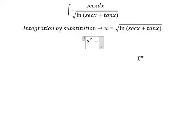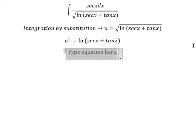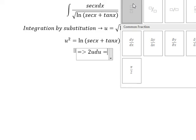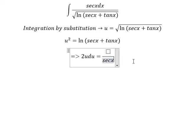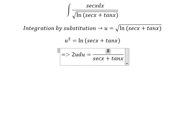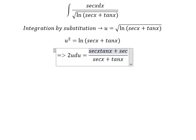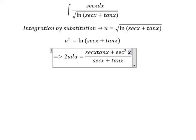Next we take the first derivative on both sides. So 2u du equals, on the numerator we have sec x tan x plus sec x squared, and we have dx here.